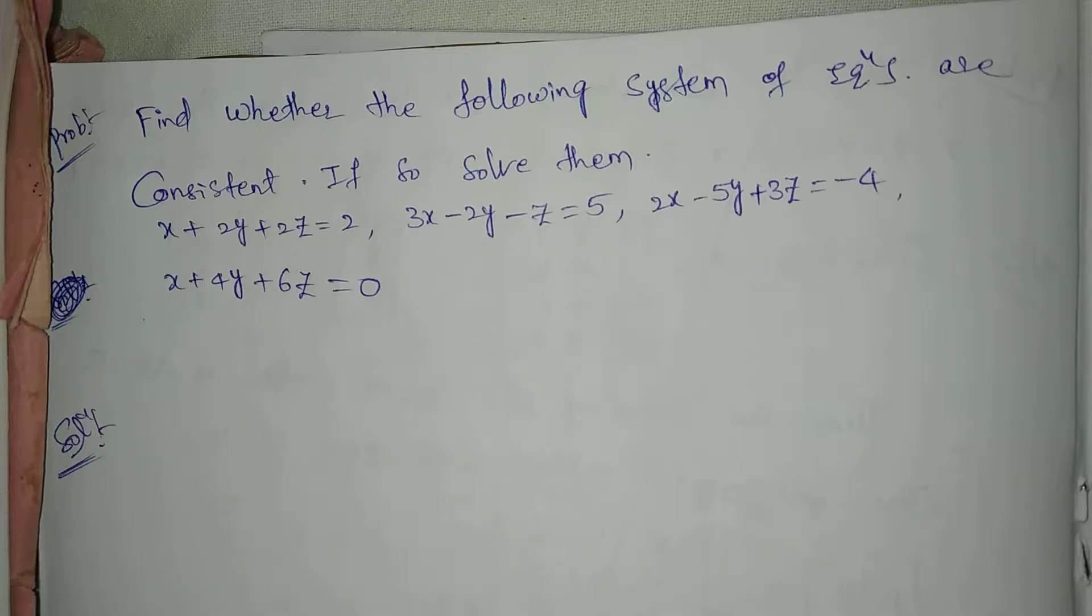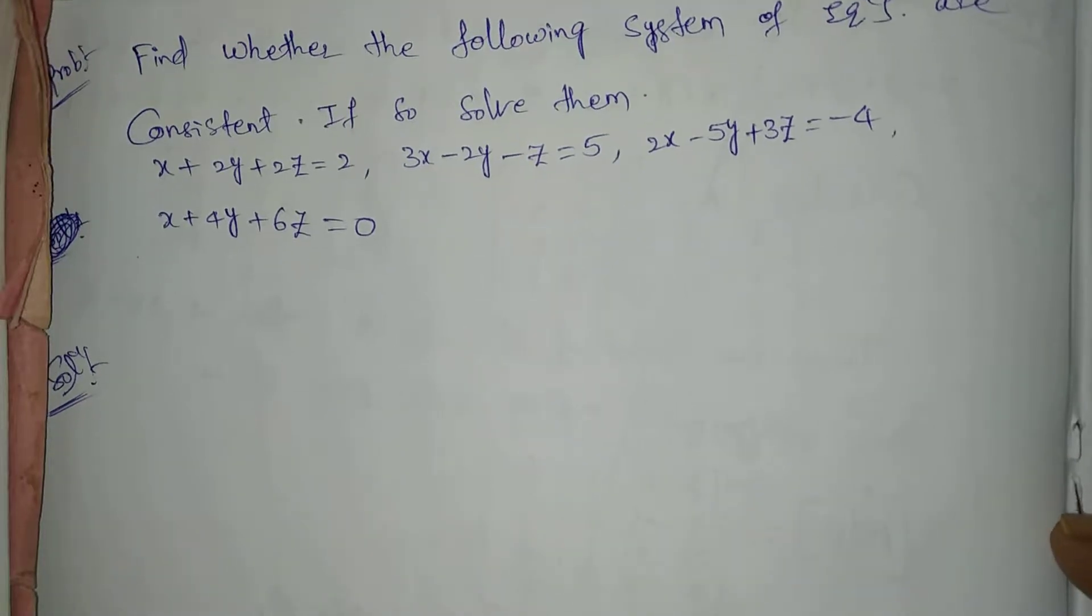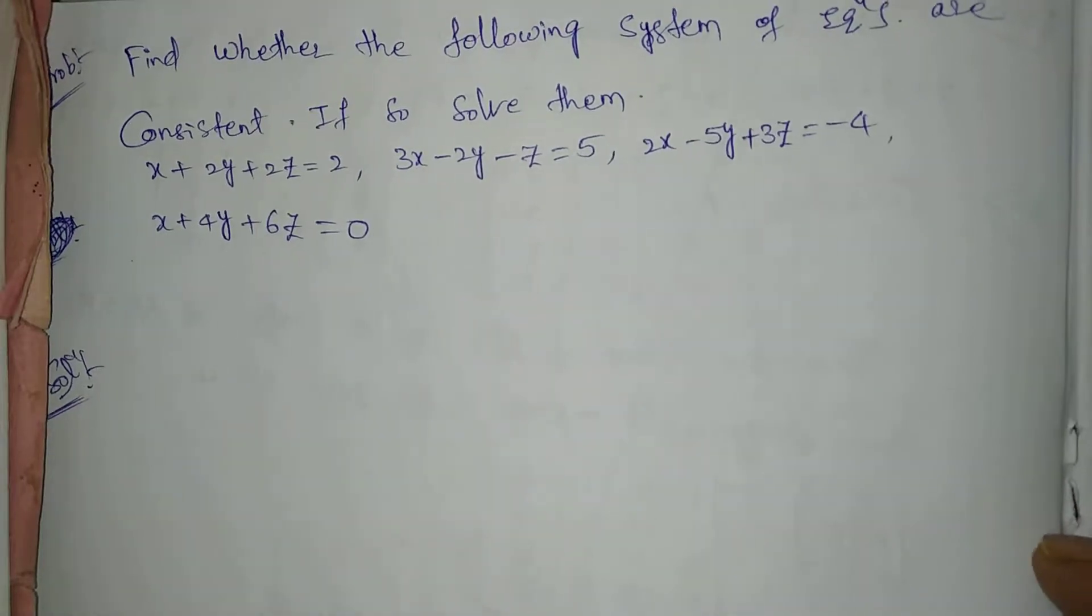First equation: x plus 2y plus 2z equal to 2. Next, 3x minus 2y minus z equal to 5. Next, 2x minus 5y plus 3z equal to minus 4. Next, x plus 4y plus 6z equal to 0. Now here, 4 equations here.